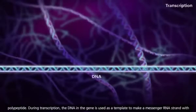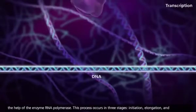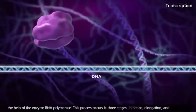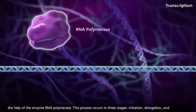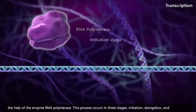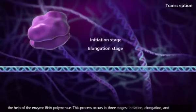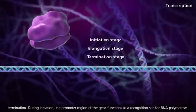During transcription, the DNA in the gene is used as a template to make a messenger RNA strand with the help of the enzyme RNA polymerase. This process occurs in three stages: initiation, elongation, and termination.